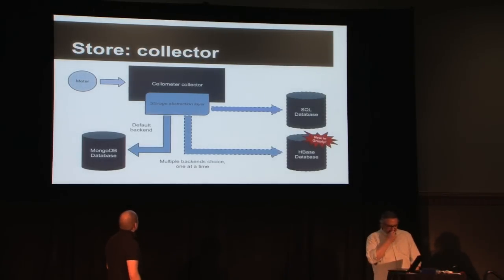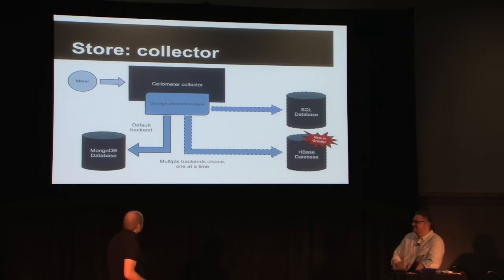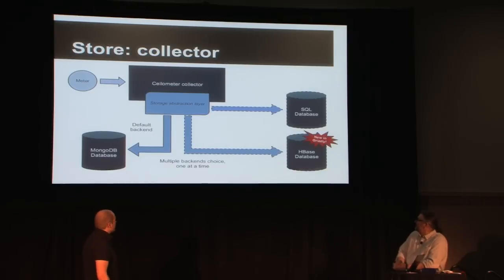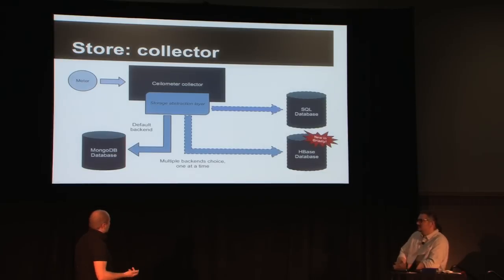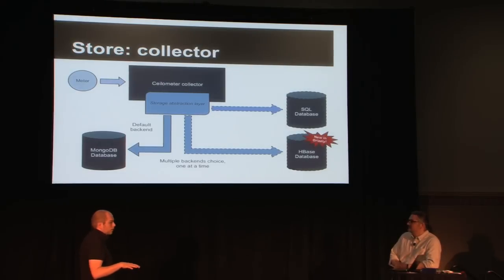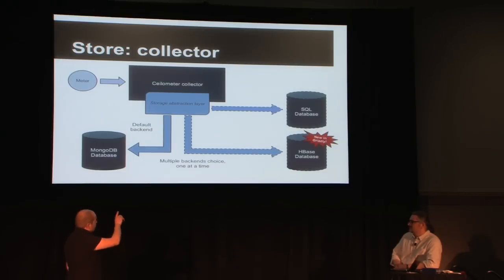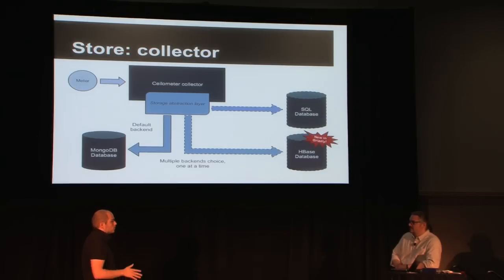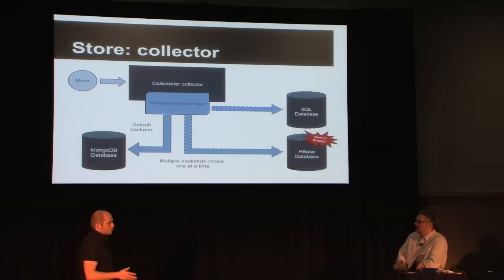An important part is the collector. This part is now optional if you are just publishing to another system, but we still have our collector, which is very handy to do things like billing. The collector didn't change a lot. We still have our architecture with a storage abstraction layer — we think we are the only one in OpenStack to use this, because everyone else is tied to SQLAlchemy. We're able to use a lot of different backends. The default is MongoDB, which is well-tested and works. We have SQL, which is less tested but should work, though not every function is implemented. And HBase, which is new in Grizzly, also misses some meta query features in the API.